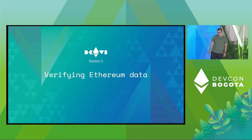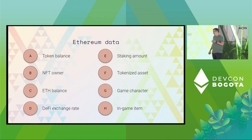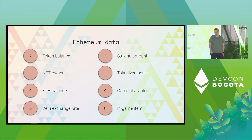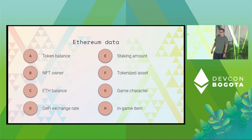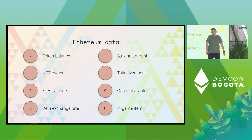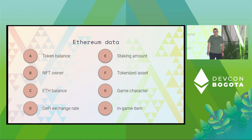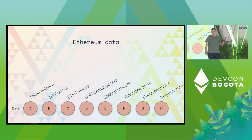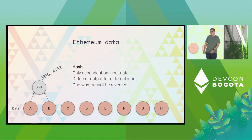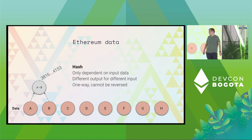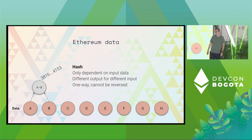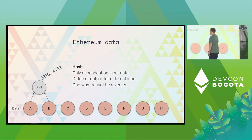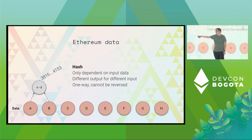So how can we make this more secure? We need to understand what's actually stored on Ethereum. NFT ownership, game characters, tokenized assets, exchange rates, or plain ETH balances — all of that is just data stored as part of the Ethereum state. Because it's data, it's just a bunch of bytes, and we can arrange it as we want. We can order it and then compute a hash function on pairs of them. A hash function is a one-way cryptographic checksum: if any of the data changes, for example if someone modifies value B, the hash also changes.